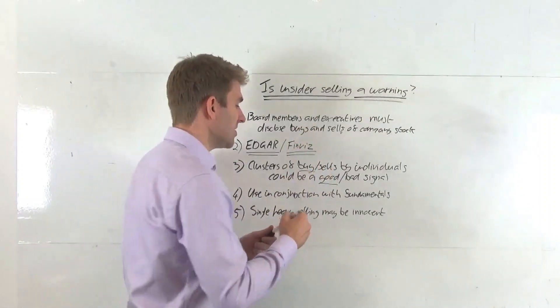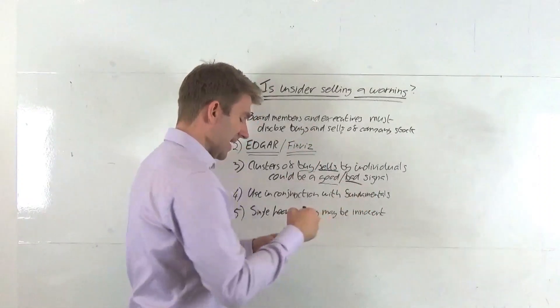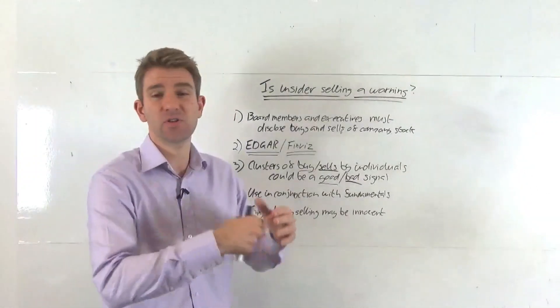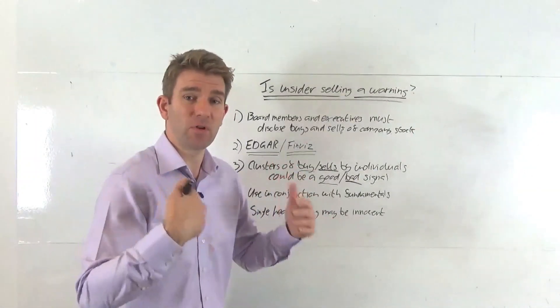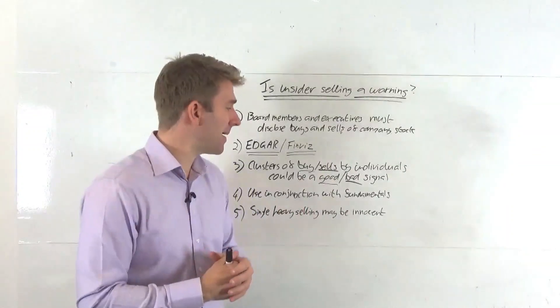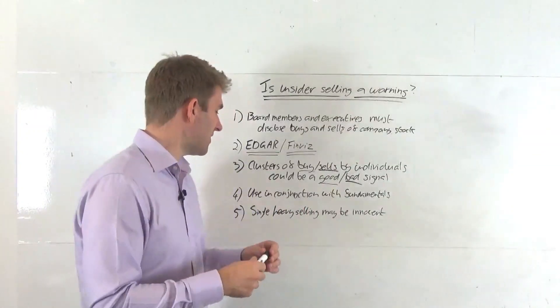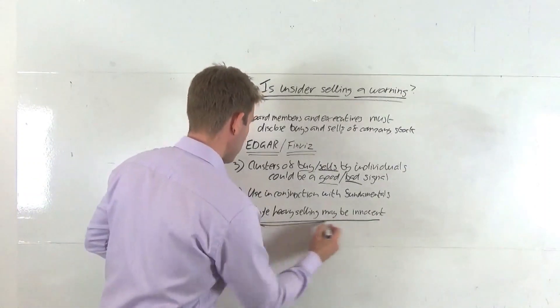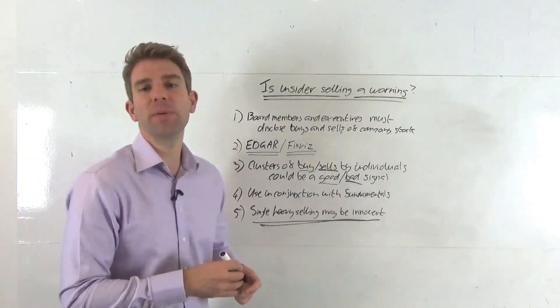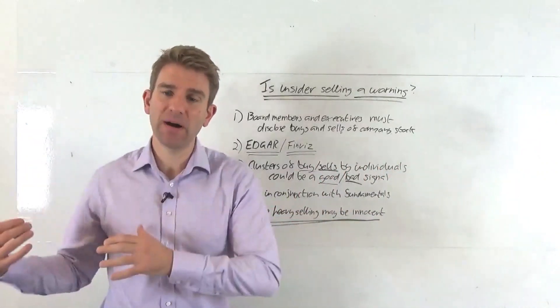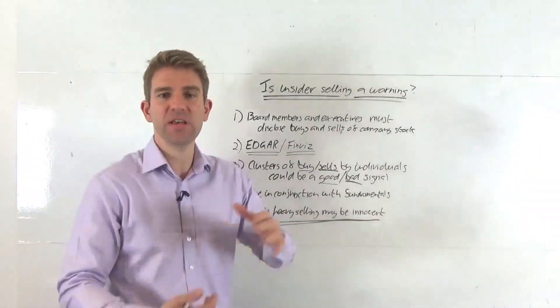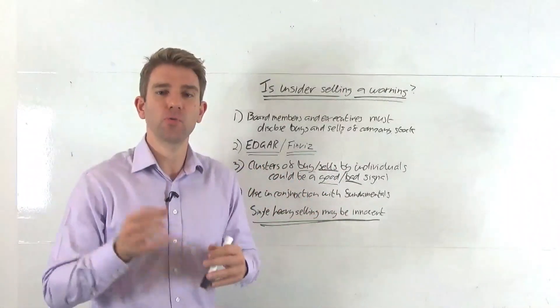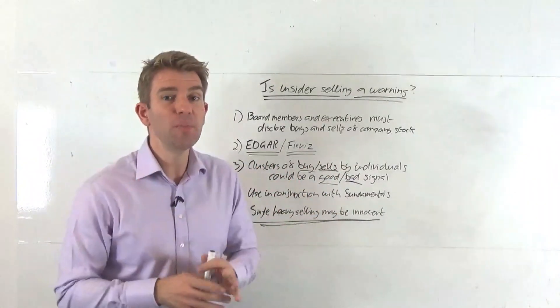If directors are dumping stock more than buying and you're getting a swathe of directors getting rid of lots of stock, that's probably a bad sign. But the point is: if it's just one director or one board member, that could be innocent. It could be looking to cash in to buy a house, buy an asset, or diversify their investment. I wouldn't think that just one or two people selling off is a big deal.